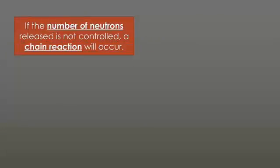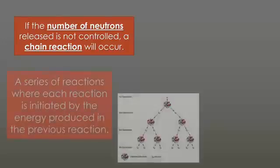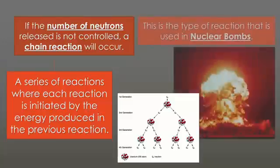In a fission reaction, if the number of neutrons released is not controlled, we have what we call a chain reaction. A chain reaction is a series of reactions in which the reaction is initiated by the energy produced in the previous reaction. Therefore, when we talk about atomic bombs, this is the type of reaction that we use in nuclear bombs. It's an unstable chain reaction of energy production. The chain only ends when there's no more fissionable material left.